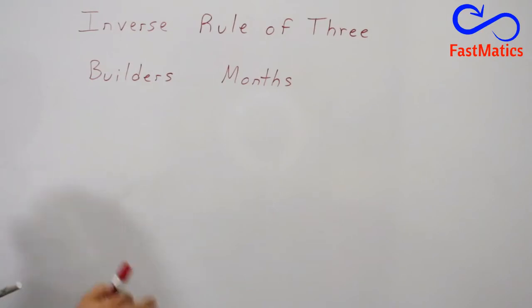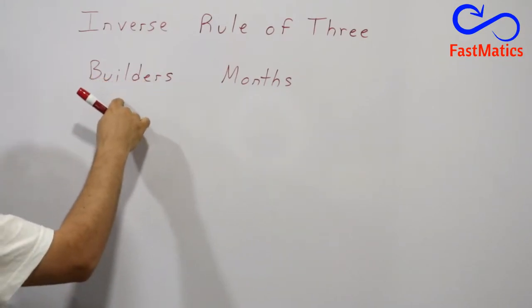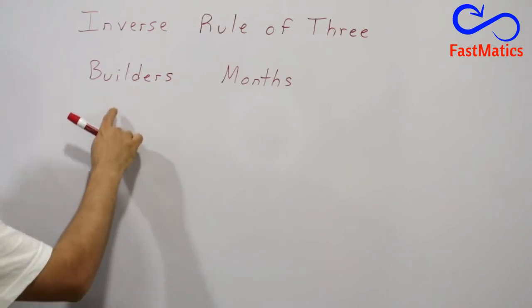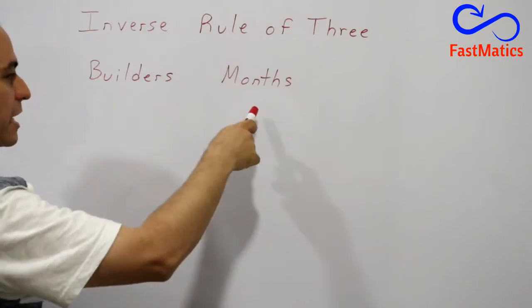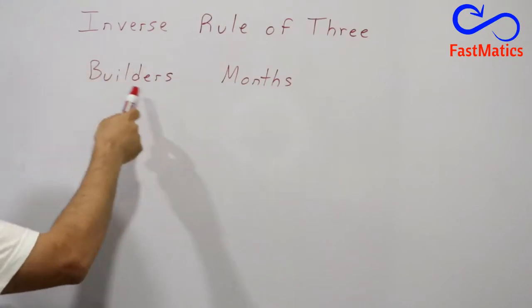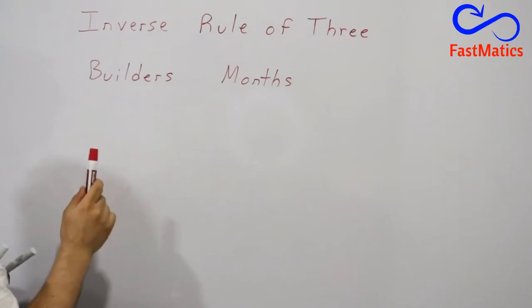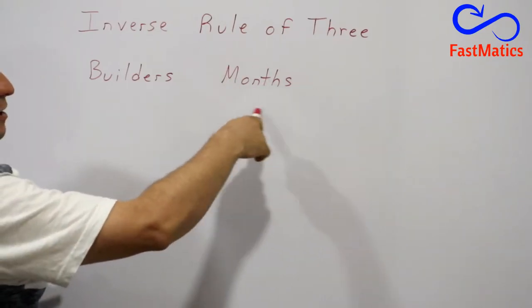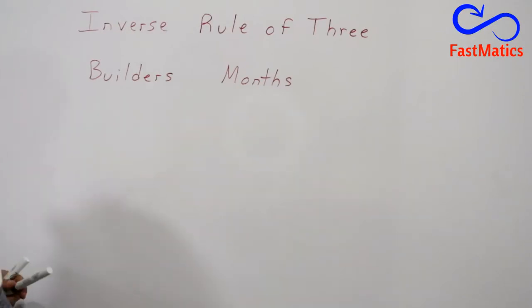It is very important that with direct rule of 3 or inverse rule of 3, if you write here builders, then you are going to write builders up and down. And if you write here months, you are going to write or calculate months here. If you put here money, you're going to write data of money here. And if you write here kilograms, you're going to write those data here.